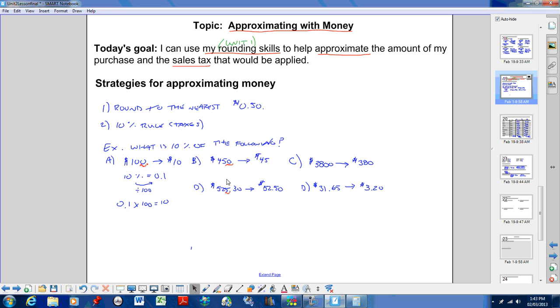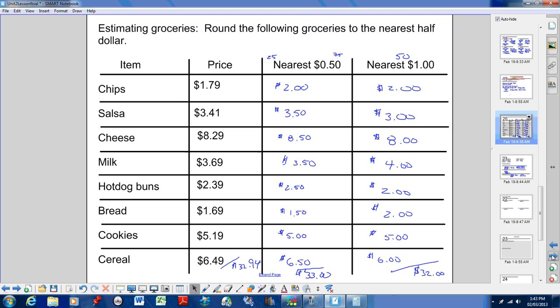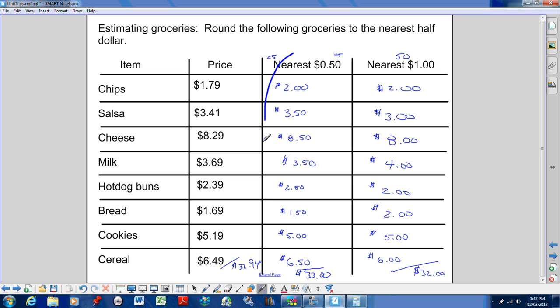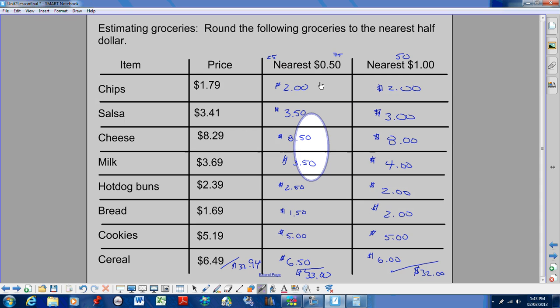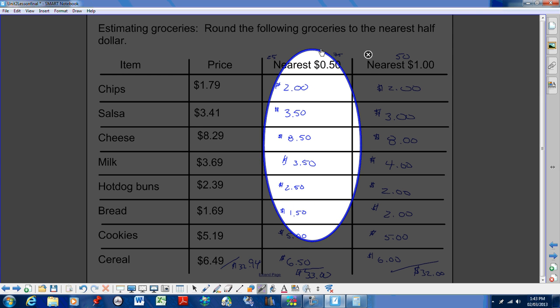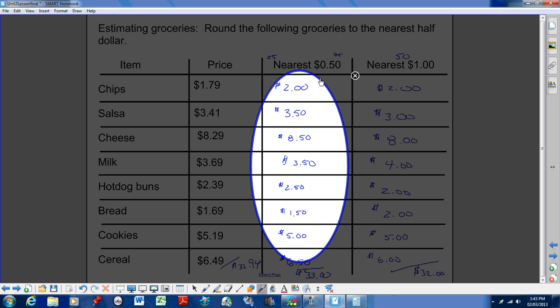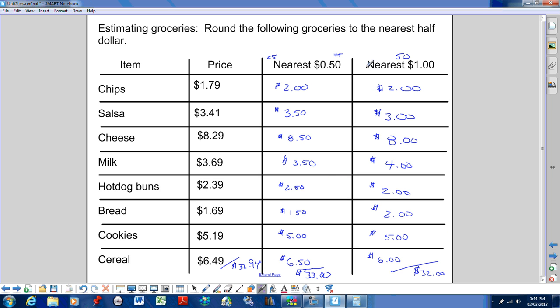Alright, welcome back to the second part of Approximating Money. So with Approximating Money, we talked about it's going to require rounding skills. So the first half of this, we were rounding to the nearest 50 cents or rounding to the nearest dollar, depends on the situation.